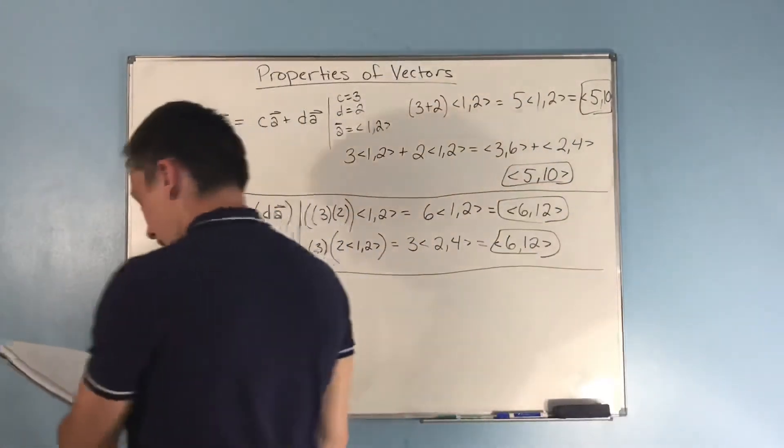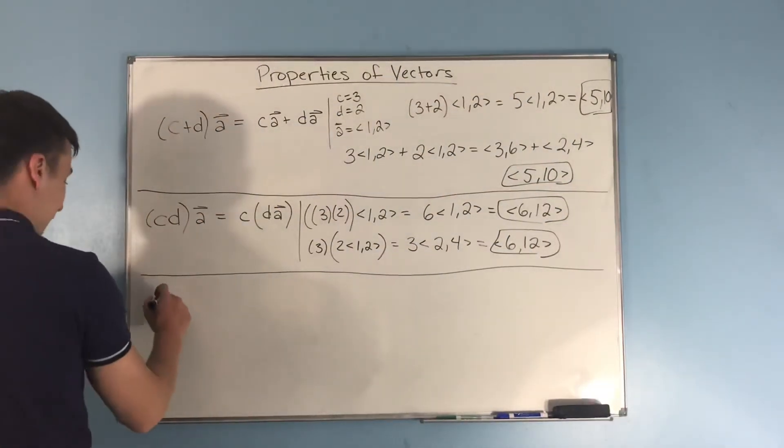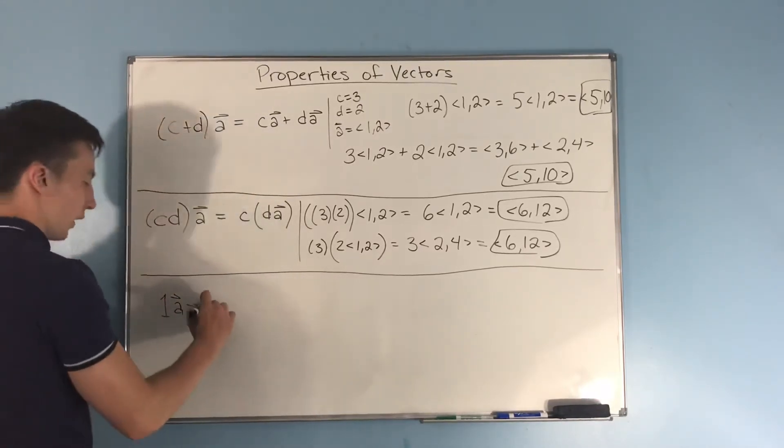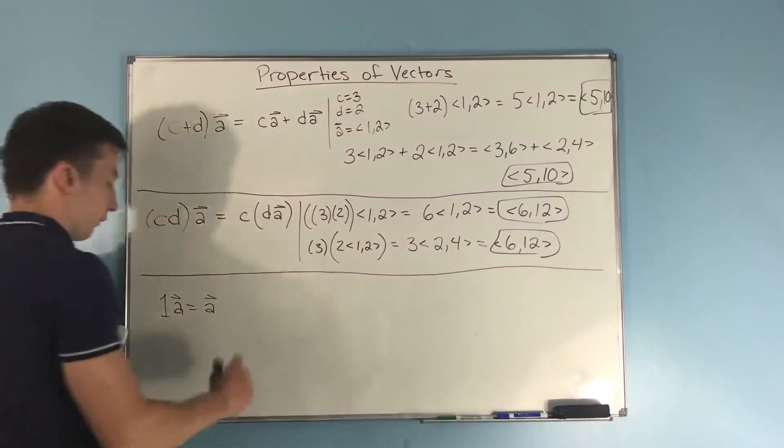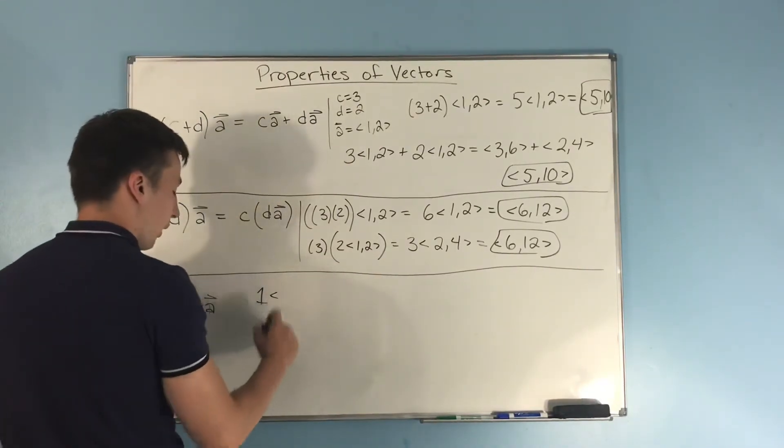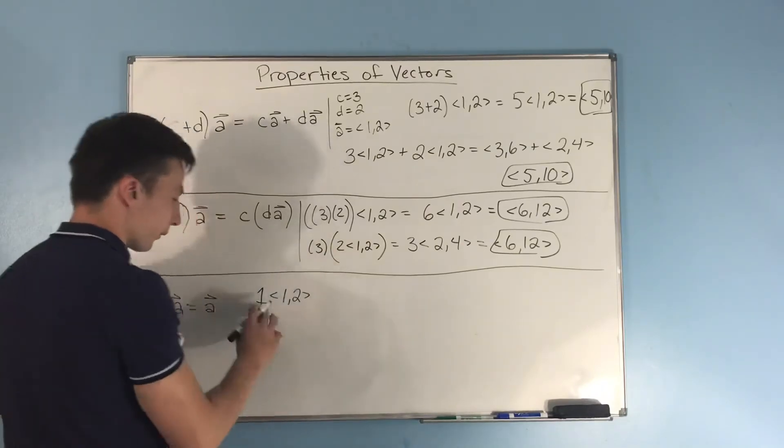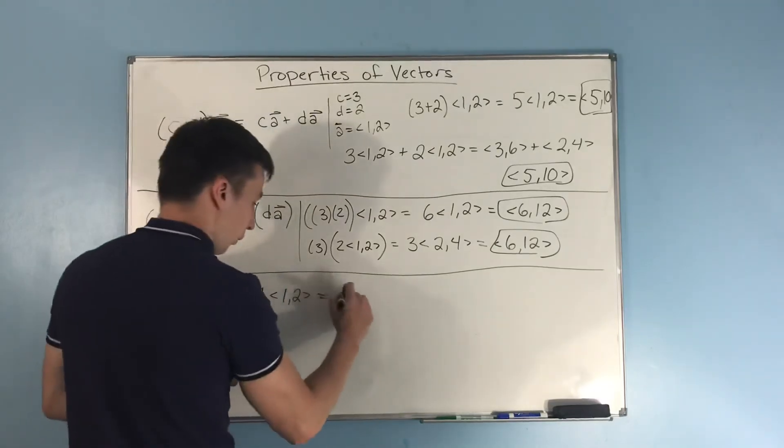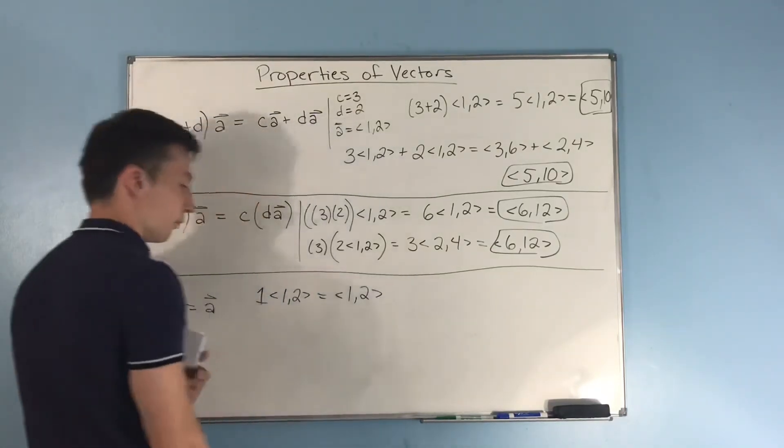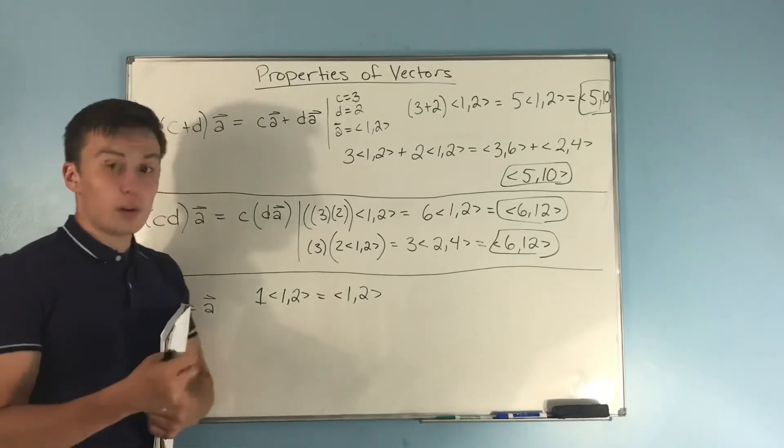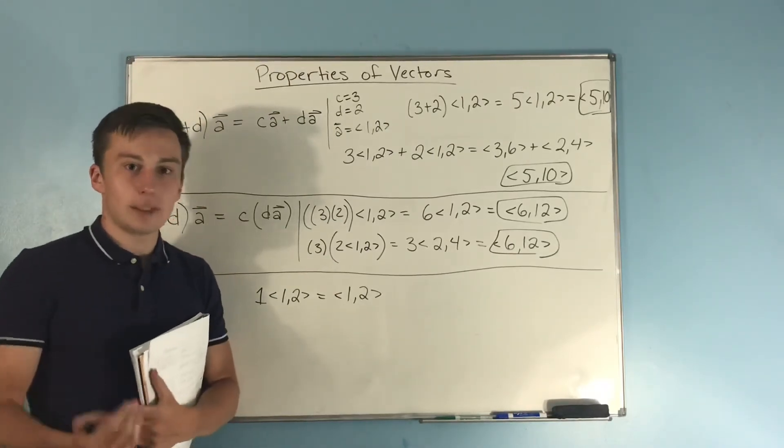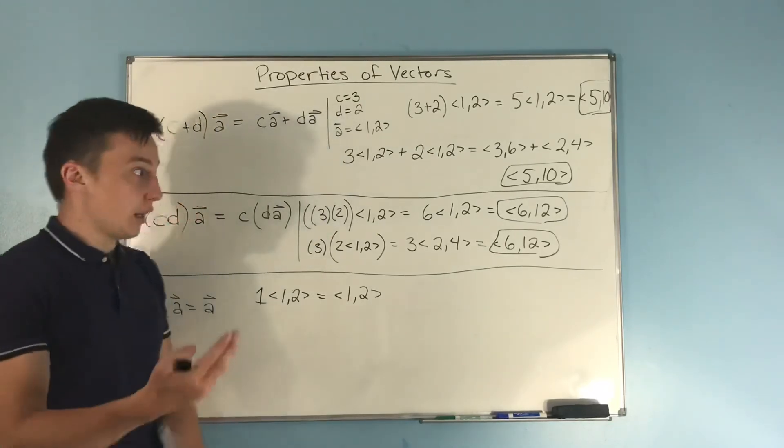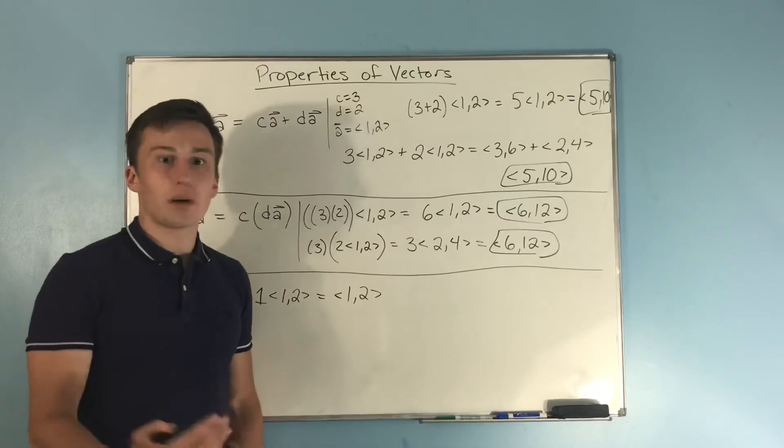Finally, for our last property here, we have that, believe it or not, 1 times the vector a is going to equal a. To show you this one, if it's not obvious already, we have a 1 outside, and we have a 1,2. And you multiply 1 through. That's still going to give you 1,2. So this has basically been all of the properties that we learned in elementary school that we used for numbers now applied to vectors. And you see that they basically all work.